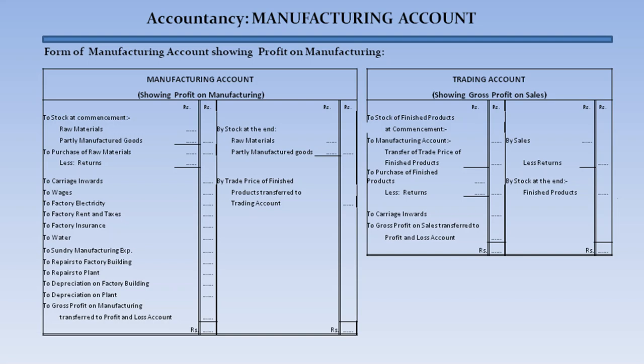On the trading account showing gross profit on sales, we will have: stock of finished products at commencement, transfer of trade price of finished goods from the manufacturing account, purchases of finished goods less returns, and carriage inwards. On the credit side: sales less returns and stock at end of finished products. By netting these figures we arrive at the gross profit on sales, which is transferred to the profit and loss account.